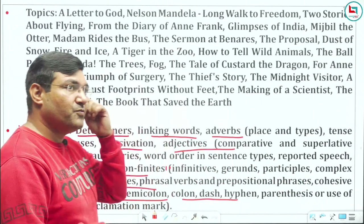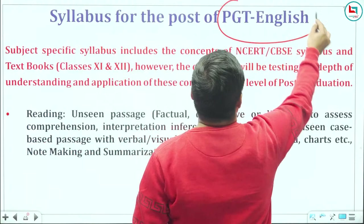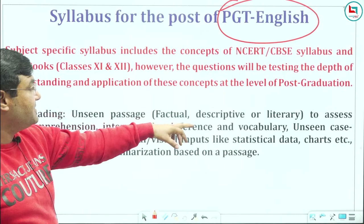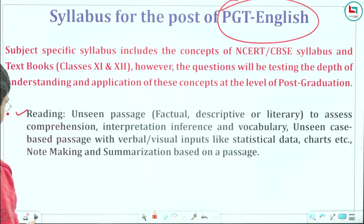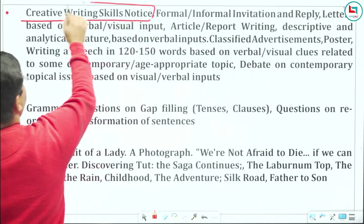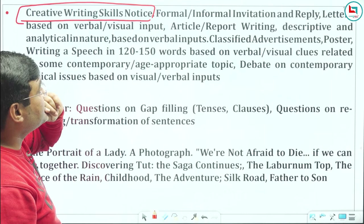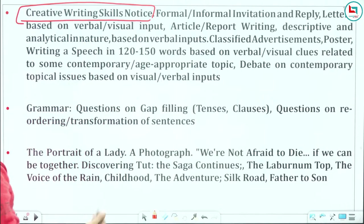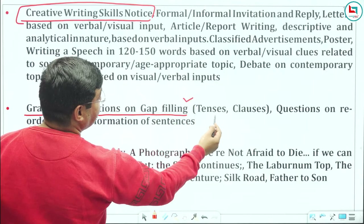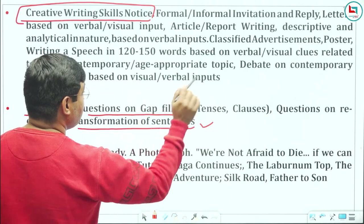Now moving to PGT syllabus. For PGT subject specific: reading unseen passage — factual, descriptive comprehension. There is also creative writing — writing skills questions on formal information. Writing a speech in 120 words based on verbal cues. These will be objective-type questions, not descriptive. Grammar: questions on gap filling, tenses, clauses, reordering, transformation of sentences — PQR-type items.